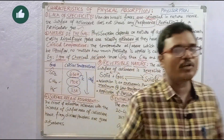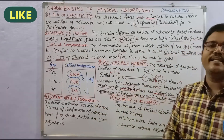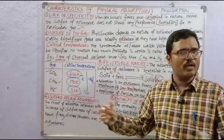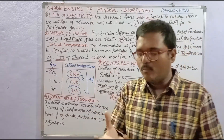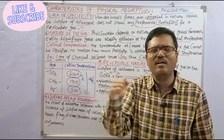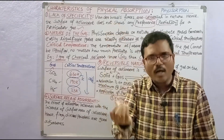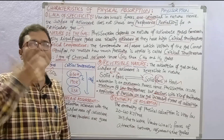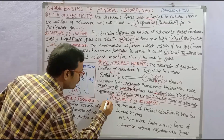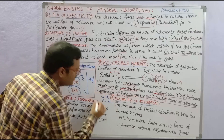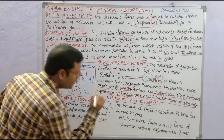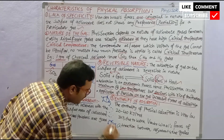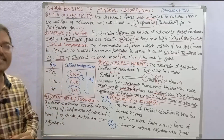Adsorption is directly proportional to the surface area of the adsorbent. For example, when using charcoal, a finely powdered form is preferred. The surface area increases when the adsorbent is available in the finely divided state.